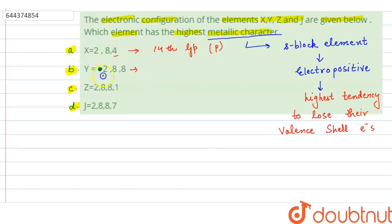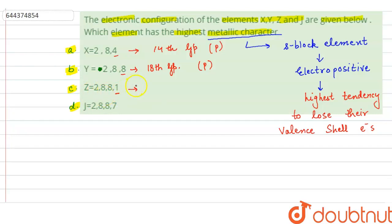For element Y, the configuration is 2,8,8. The outermost shell is complete with 8 electrons, which means it belongs to the 18th group — it has a noble gas configuration, so it is also a p-block element.